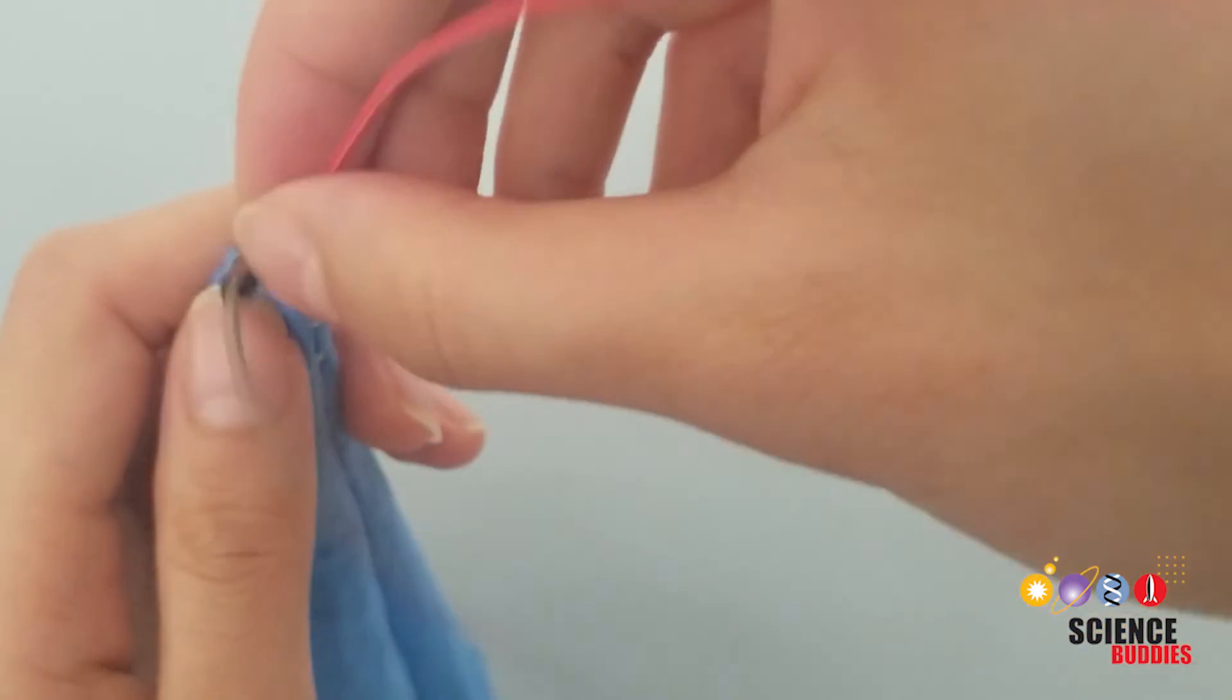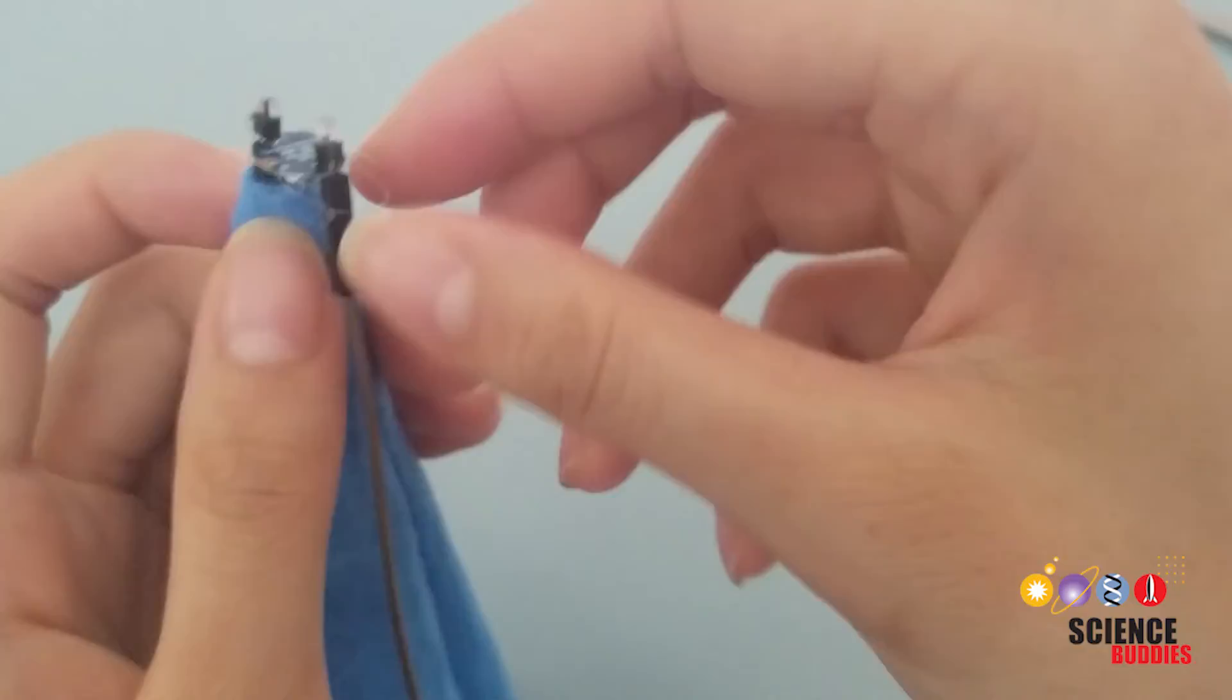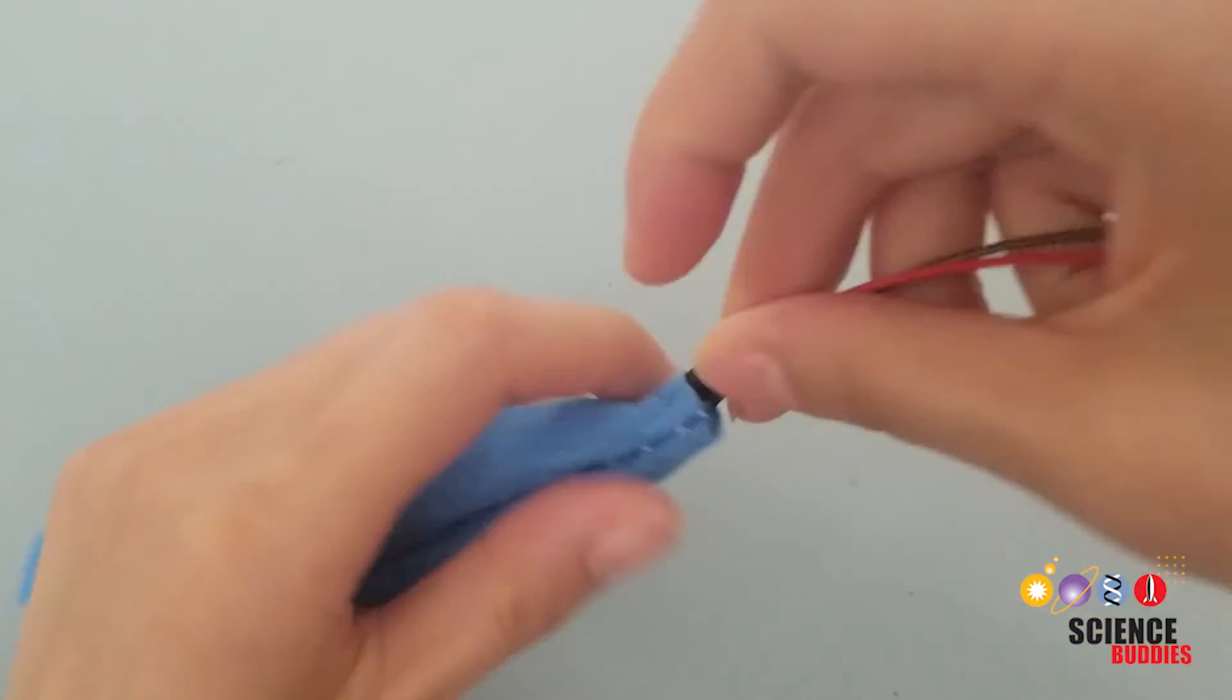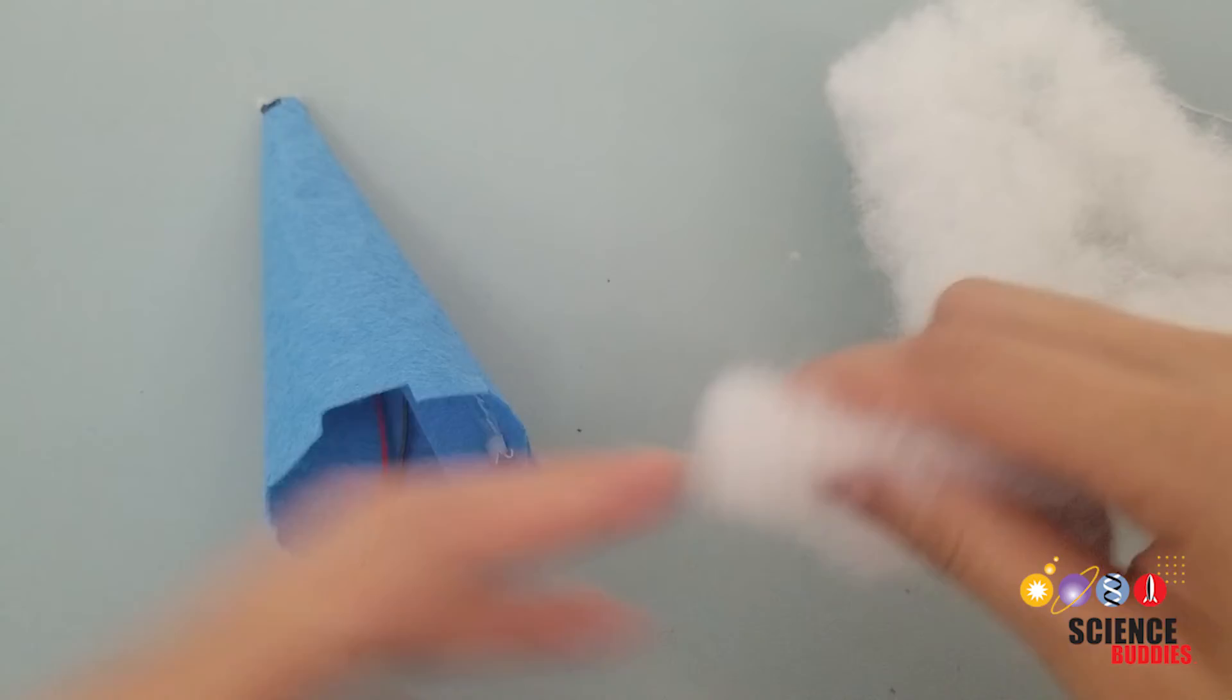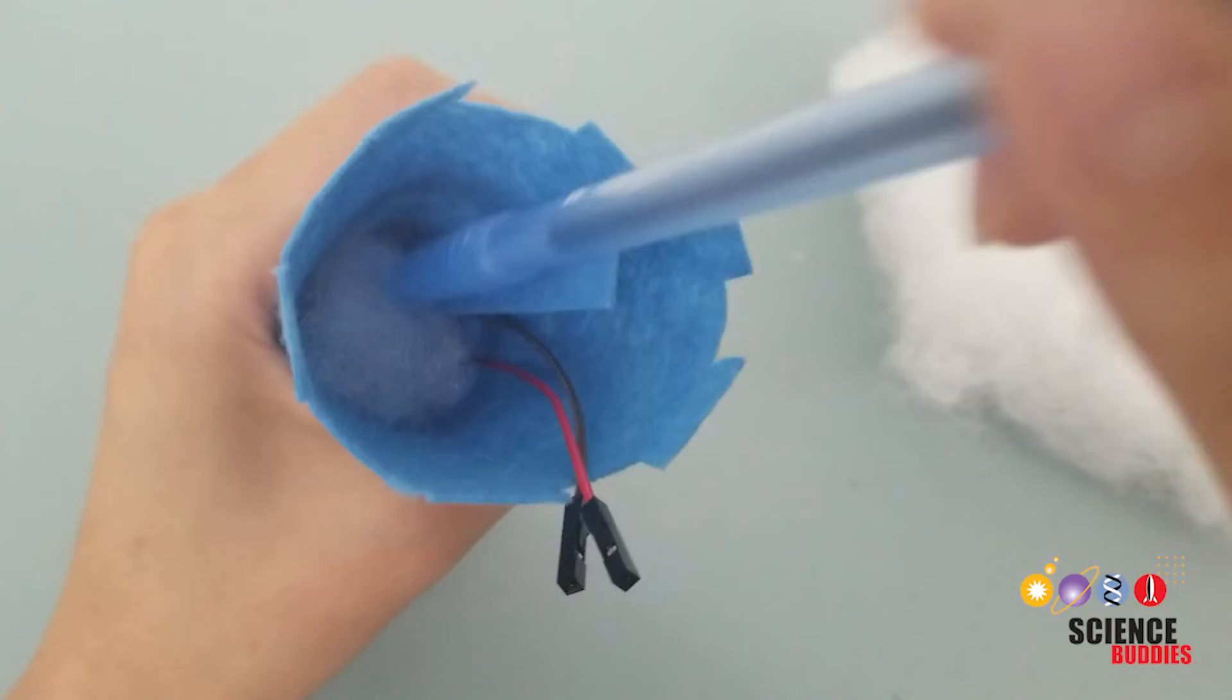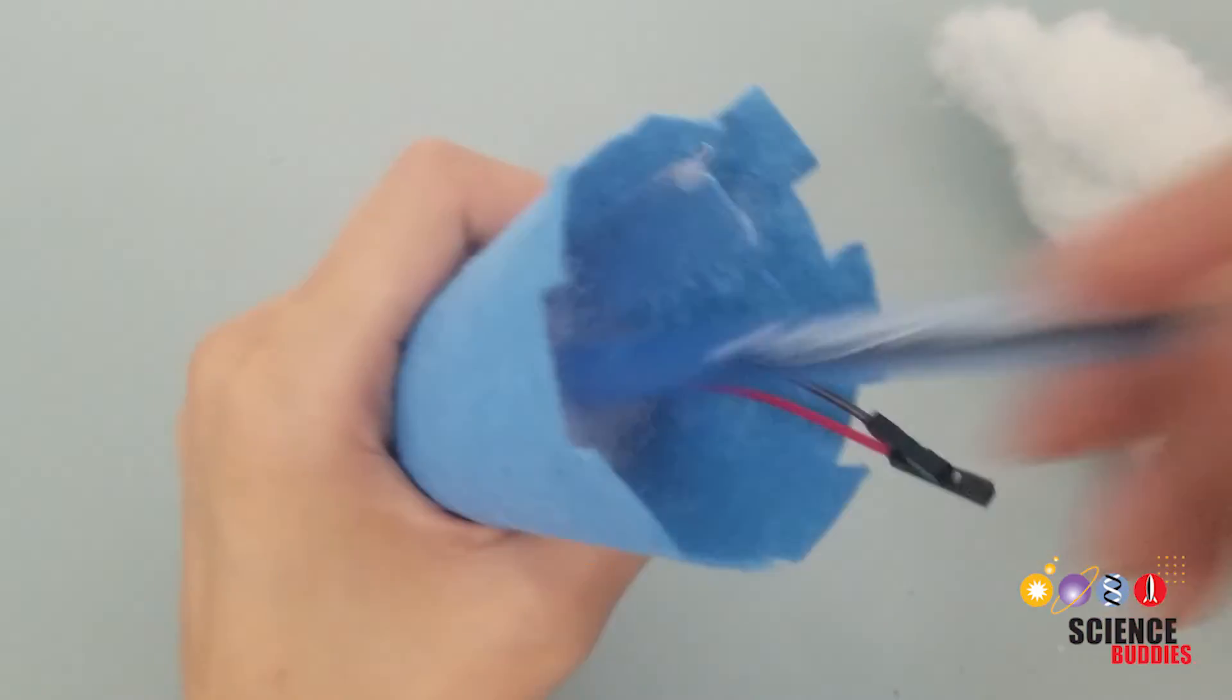Thread your jumper wires connected to your RGB LED through the small hole at the top of your horn. If the hole at the top is too small, cut a little bit of felt off the top so that the hole is a little bigger. Once the jumper wires are threaded through the horn, carefully stuff your unicorn horn with stuffing or cotton balls. Take a little bit of stuffing at a time and poke it into your horn using your pen.